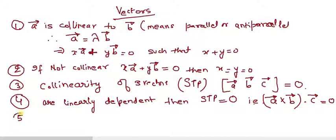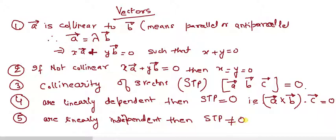Fifth point is very easy. Linearly independent. If they are linearly - who are they here? There are three vectors - are linearly independent, then scalar triple product is never equal to 0. This is the most important point that students don't know.